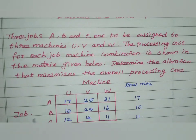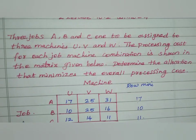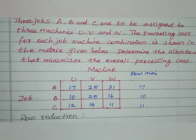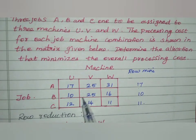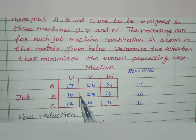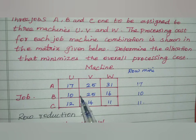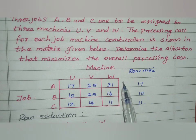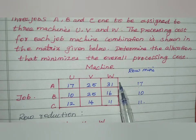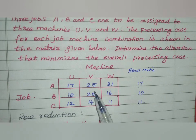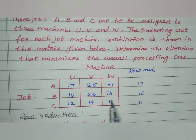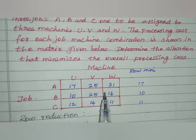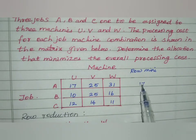Here are the machines and the jobs. First, we have to do row reduction, then column reduction. First step, we have to find the row minimum and subtract. For each row, we find the minimum value. The minimums are 17, 10, and 11.